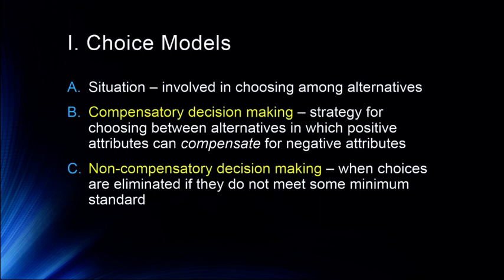Colleges and universities do this all the time: minimum GPA, minimum SAT, minimum GRE scores. That's a way to eliminate a bunch of people and then use compensatory decision-making to select their final pool of students.